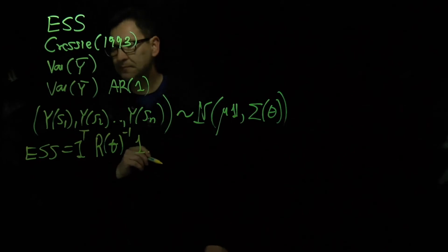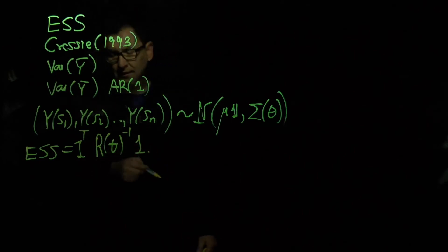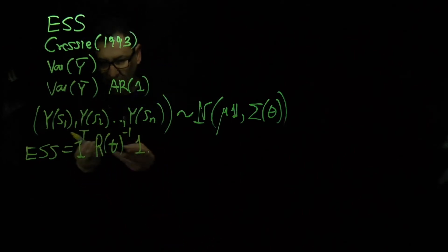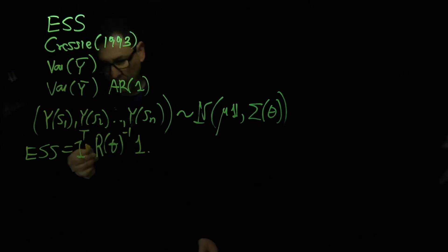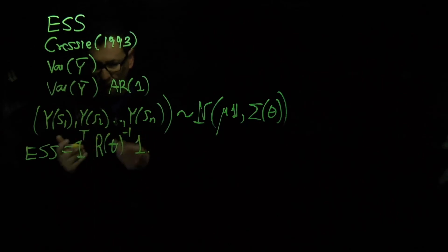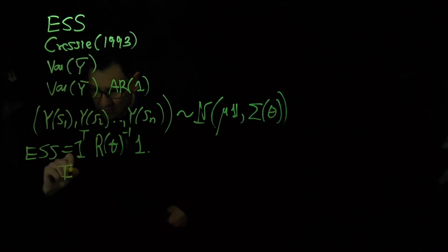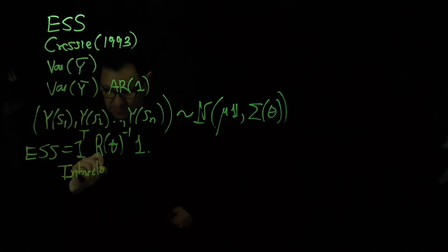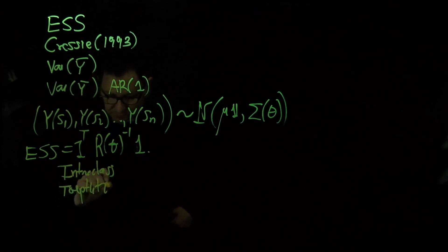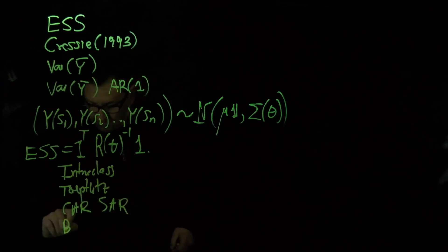So in the paper we develop the theory for this quantity, and especially we consider many correlation structures, pattern correlation structures like this. For example, interclass correlation, Toeplitz matrices, CAR processes, SAR processes, and bivariate normal processes.